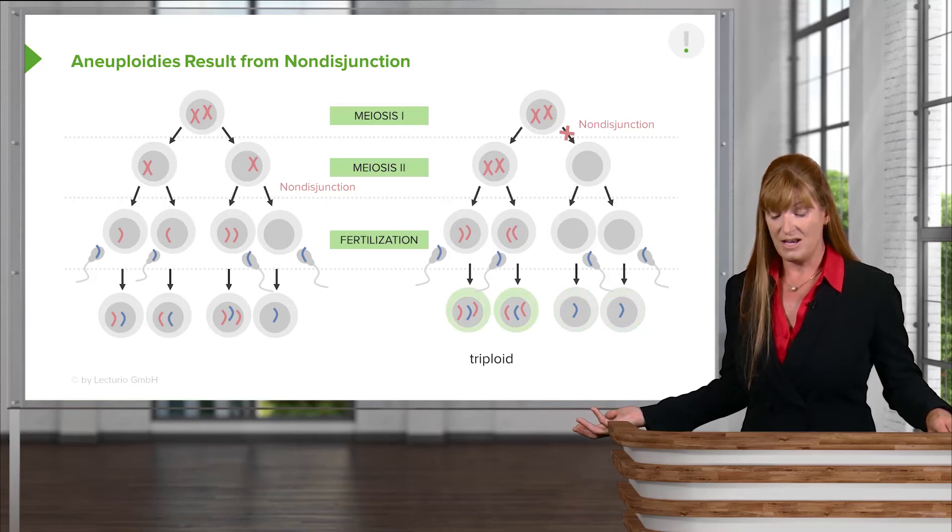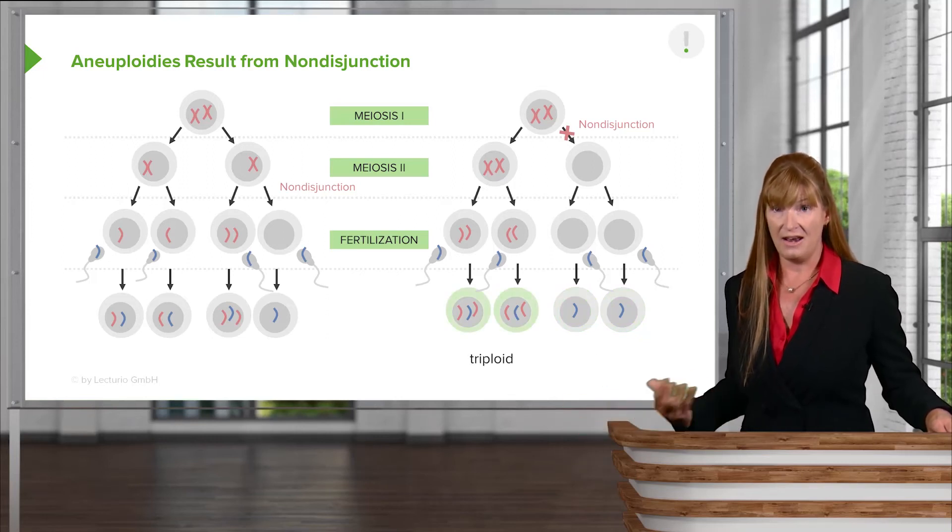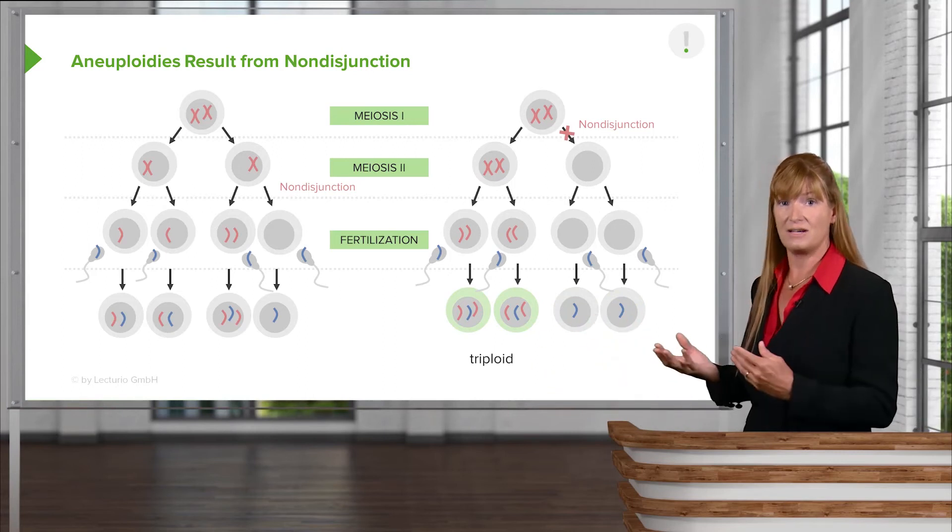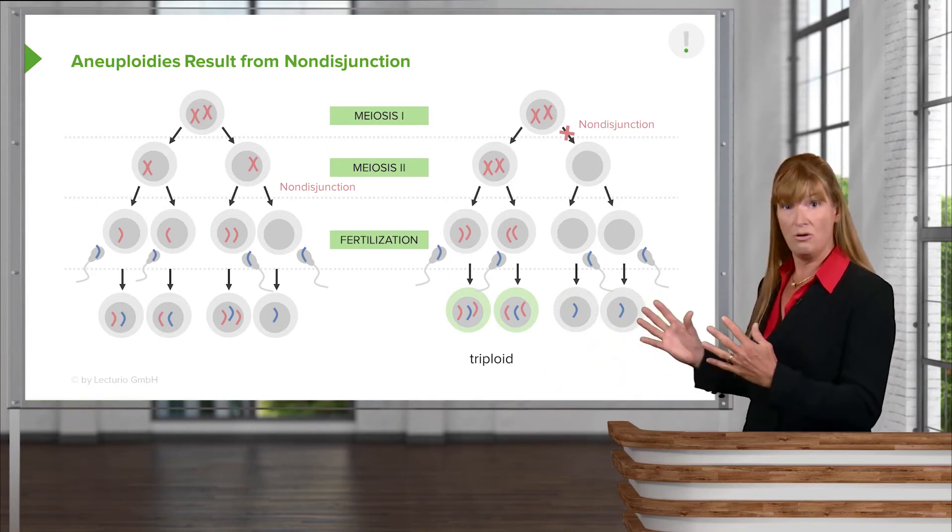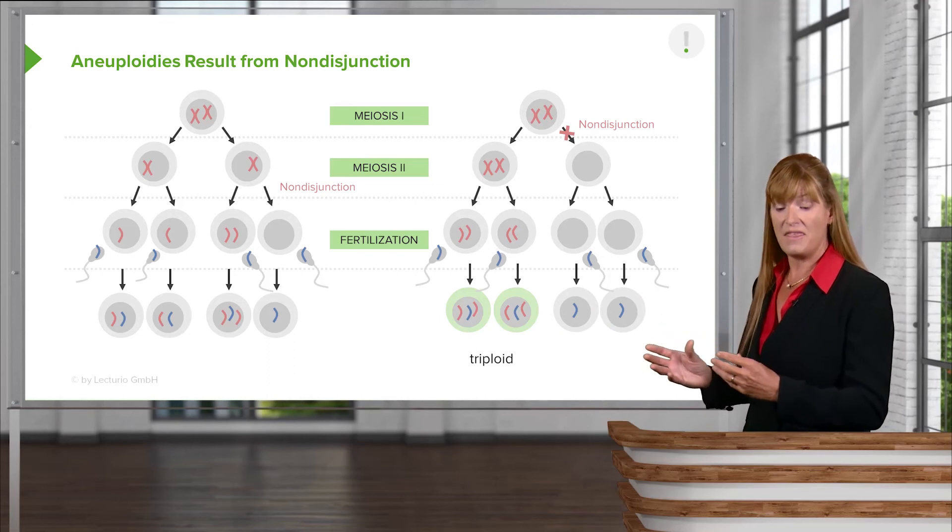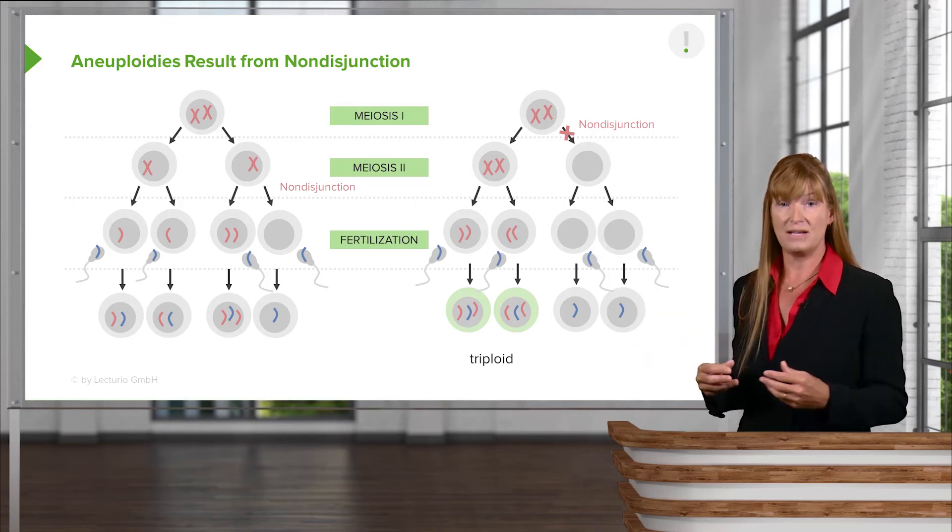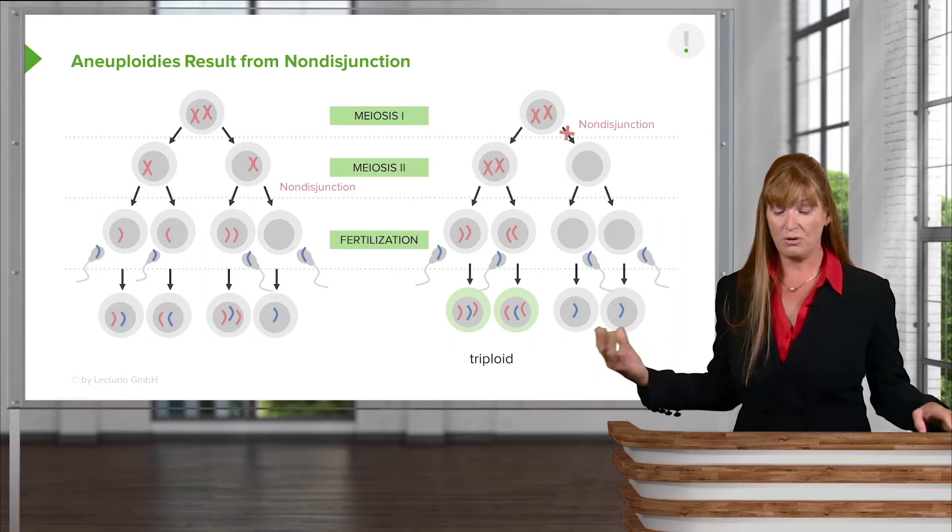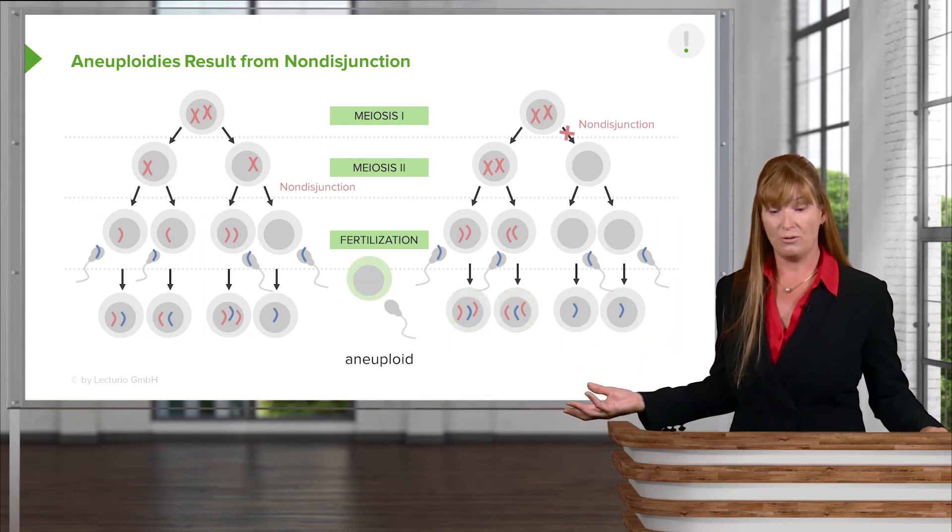Again, the triploid in certain conditions can persist. Now, keep in mind that these graphics are showing specifically the oocyte development. But the same thing could happen during a spermatocyte development. And so the sperm could be aneuploid or polyploid.